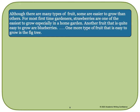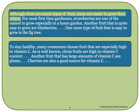We will now use our three types to begin writing our body paragraphs. The first body paragraph will talk about fruit that are easy to grow. The topic sentence says: 'Although there are many types of fruit, some are easier to grow than others.' In the rest of this paragraph, you would write about the different fruits that are easy to grow. The second body paragraph is about fruit that are high in vitamin C, with the topic sentence: 'To stay healthy, many consumers choose fruit that are especially high in vitamin C.' In this paragraph, you give more examples of fruit that fit this type.